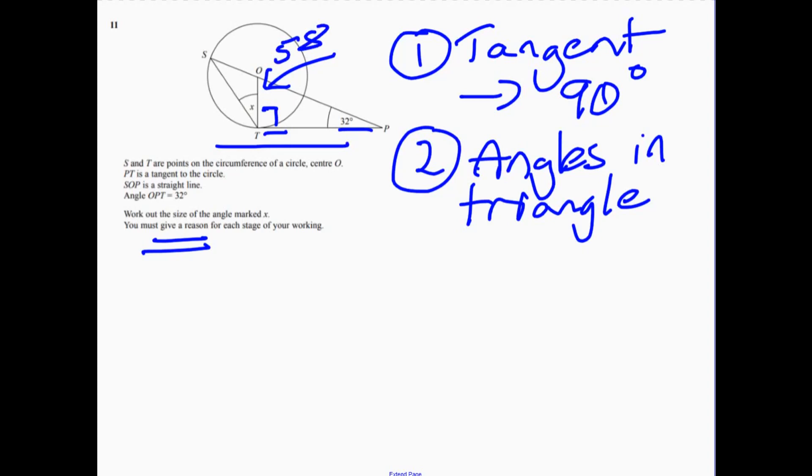And now we can work out the other side. So number three, straight line. We know it's 180 degrees on a straight line. So therefore, this one up here must be 122.